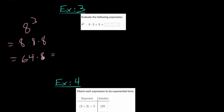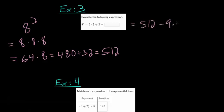So you can do 8 times 60, which is 480, and then add that to 8 times 4, which is 32. 480 plus 32 would be 512. So when we rewrite this, we get 512 minus 9 times 2 divided by 3.